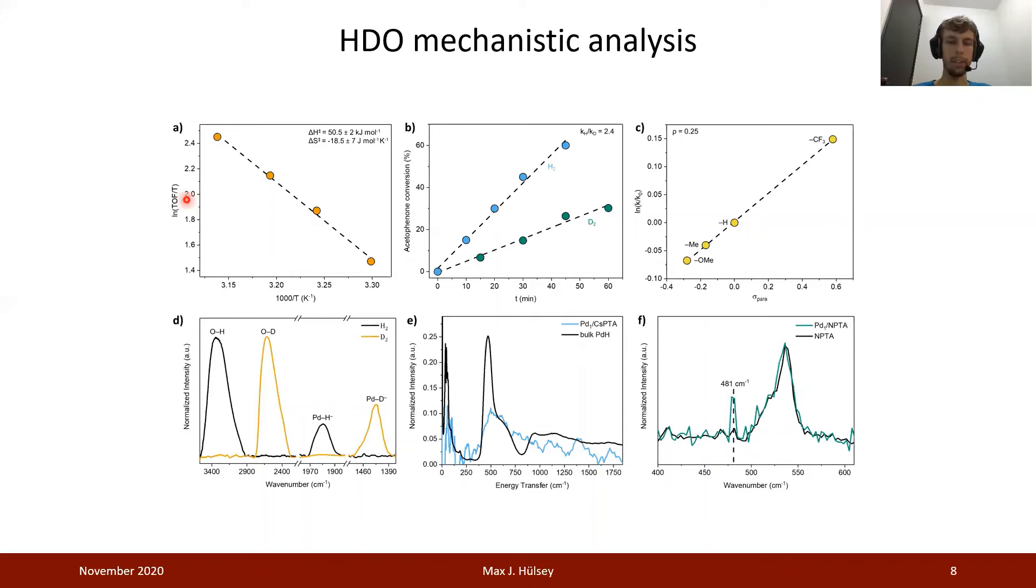In order to figure out why this catalyst has such exceptional activity, we conducted kinetic analysis and IR spectroscopic analysis. Based on the Eyring plot of the reaction at different temperatures, the activation enthalpy is fairly low, and the activation entropy is slightly negative, which means that the transition state is entropically disfavored. We observe a moderate kinetic isotope effect of roughly 2.4, which indicates that hydrogen is involved in the rate-determining step. A Hammett plot shows that electron-withdrawing substituents in the para position of the ketone group increase the reaction rate, thus indicating that we have probably a buildup of negative charge during the transition state for the hydrogenolysis.